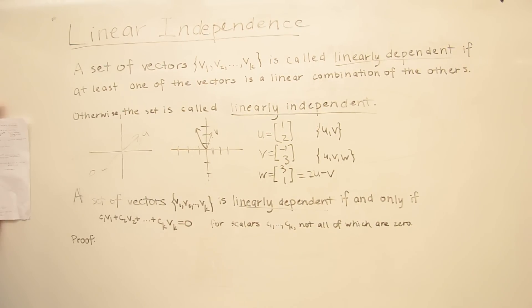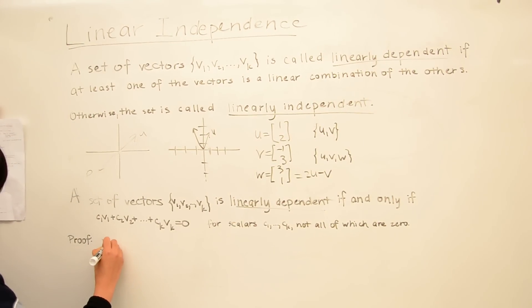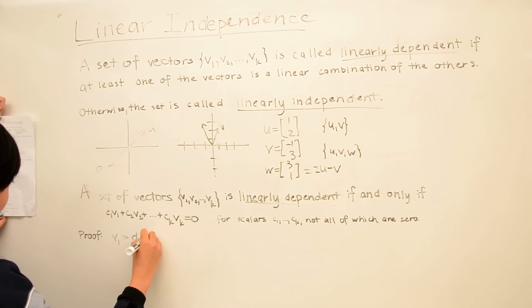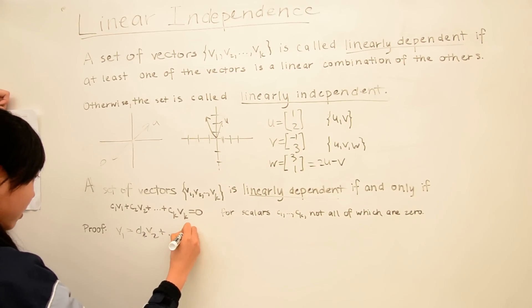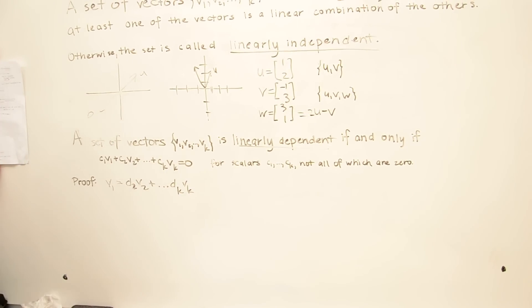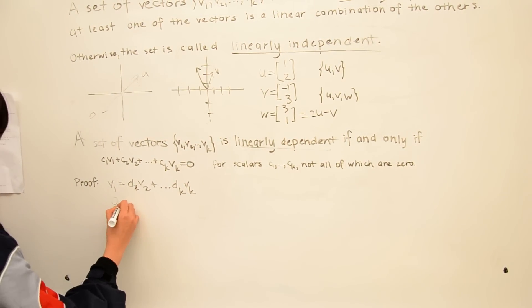For a proof, suppose that a set of vectors is linearly dependent, which means at least one of the vectors is a linear combination of the others. So say v1 can be written as a linear combination of all k vectors. Then if we subtract v1 from both sides of this equation, we're left with 0.